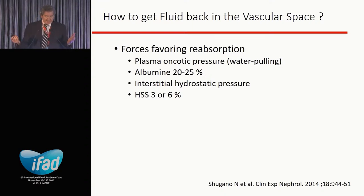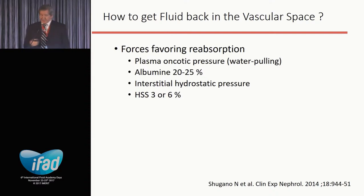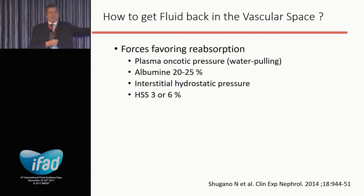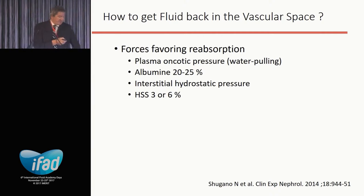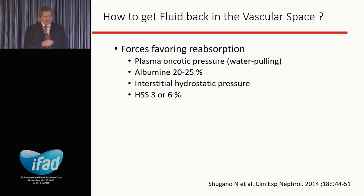We frequently face the issue that we cannot remove extravascular fluid because we do not have enough fluid in the intravascular space. There are some tricks to improve this. If we want a water-pulling effect to get fluid back from the interstitial space to the vascular space, we can use an oncotic trick with albumin 20 to 25 percent. If we want to do the same using osmotic pressure, then we can use hypertonic saline solution, 3 or 5 percent.